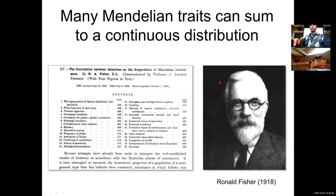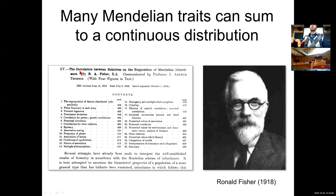This was formalized remarkably 100 years ago by R.A. Fisher in a seminal 1918 paper, where he explained the correlation between relatives on the supposition of Mendelian inheritance — basically showing that the inheritance of many, many genes, each inherited in Mendelian fashion, leads to a continuous distribution.